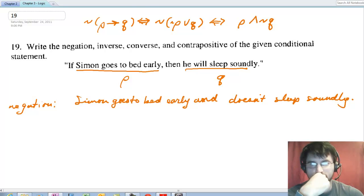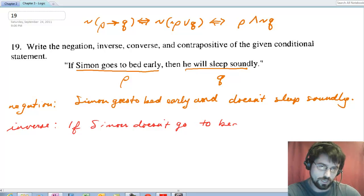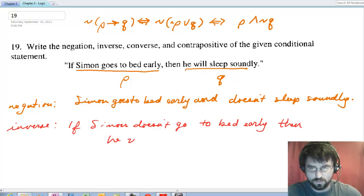The next one is the inverse. So writing them in the order that they're asking for them. The inverse is when you negate both the statements, but it's still conditional. If Simon doesn't go to bed early, then he won't sleep soundly. That's called the inverse.